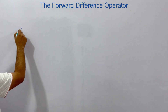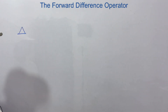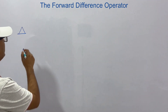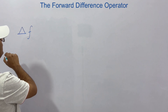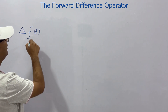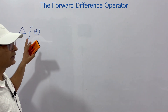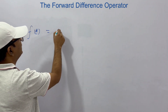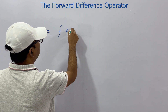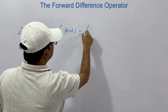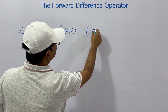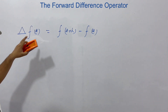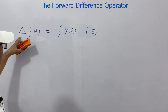We know what is the forward operator — it is called the descending operator also. So if we say del of f(a), where f is a function, then del of f(a) means f(a+h) minus f(a). In the table, this minus this — that was the meaning of del f(a), the first difference.